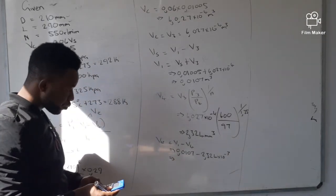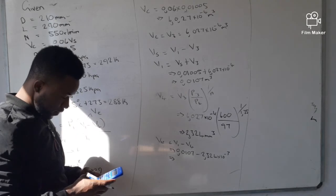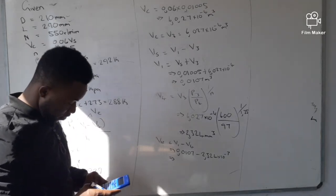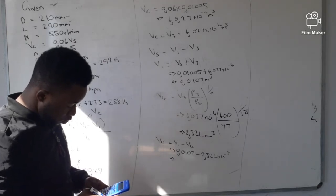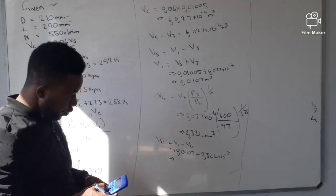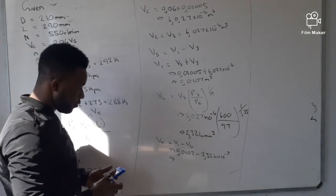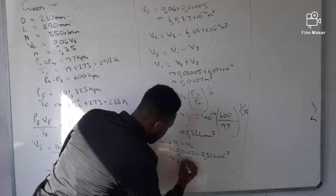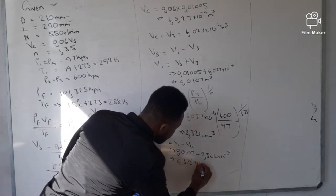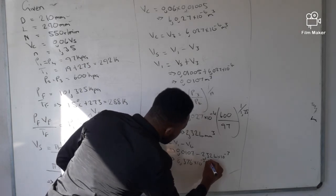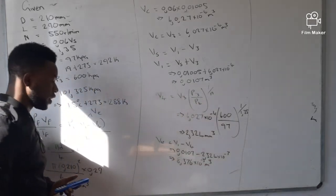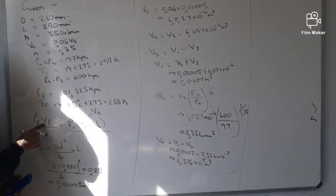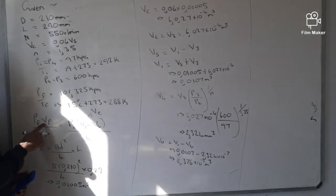Computing Ve: 0.0107 − 2.324 × 10⁻³ = 8.376 × 10⁻³ cubic meters. So Ve = 8.376 × 10⁻³ m³. Now we have all the values needed and the only unknown is Vf, the free air volume, which we can now calculate.